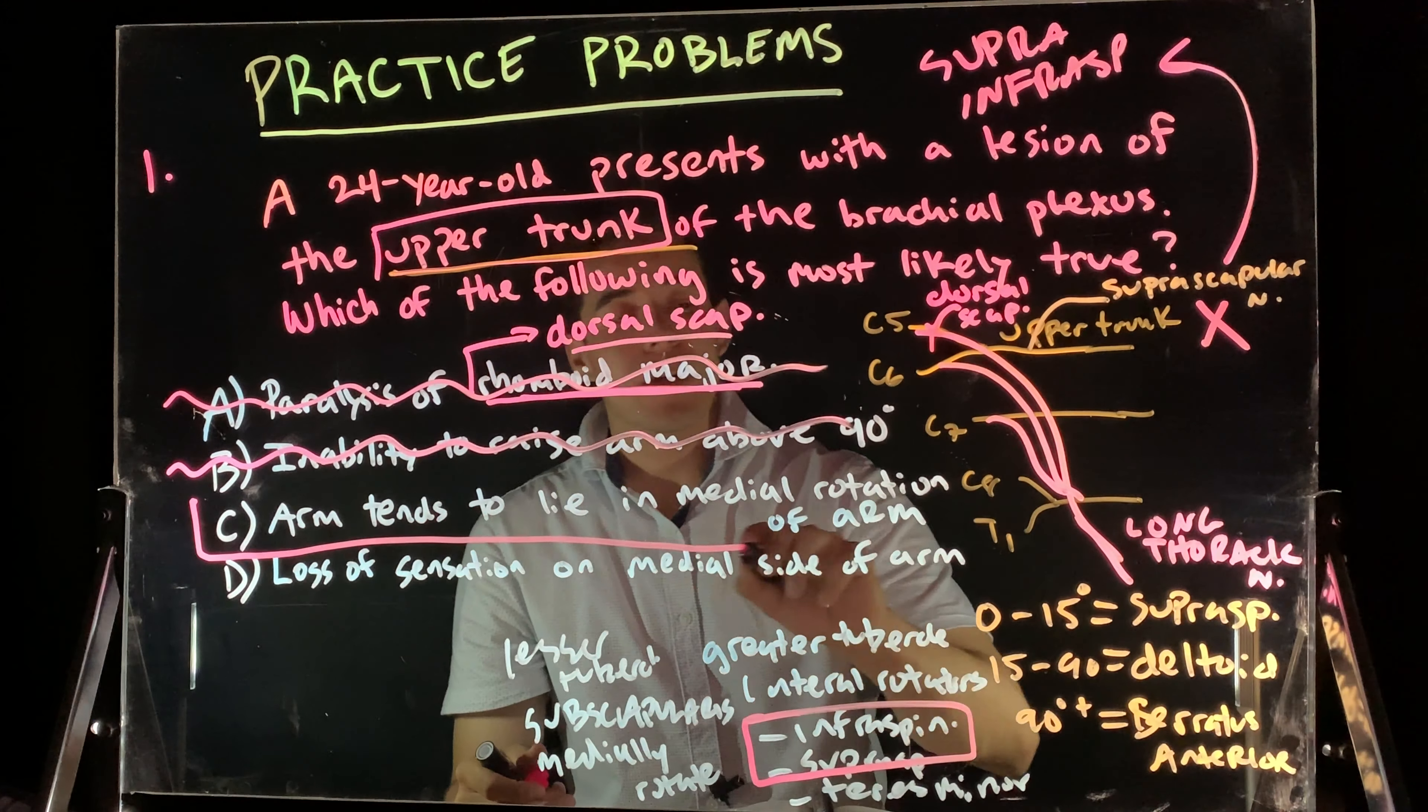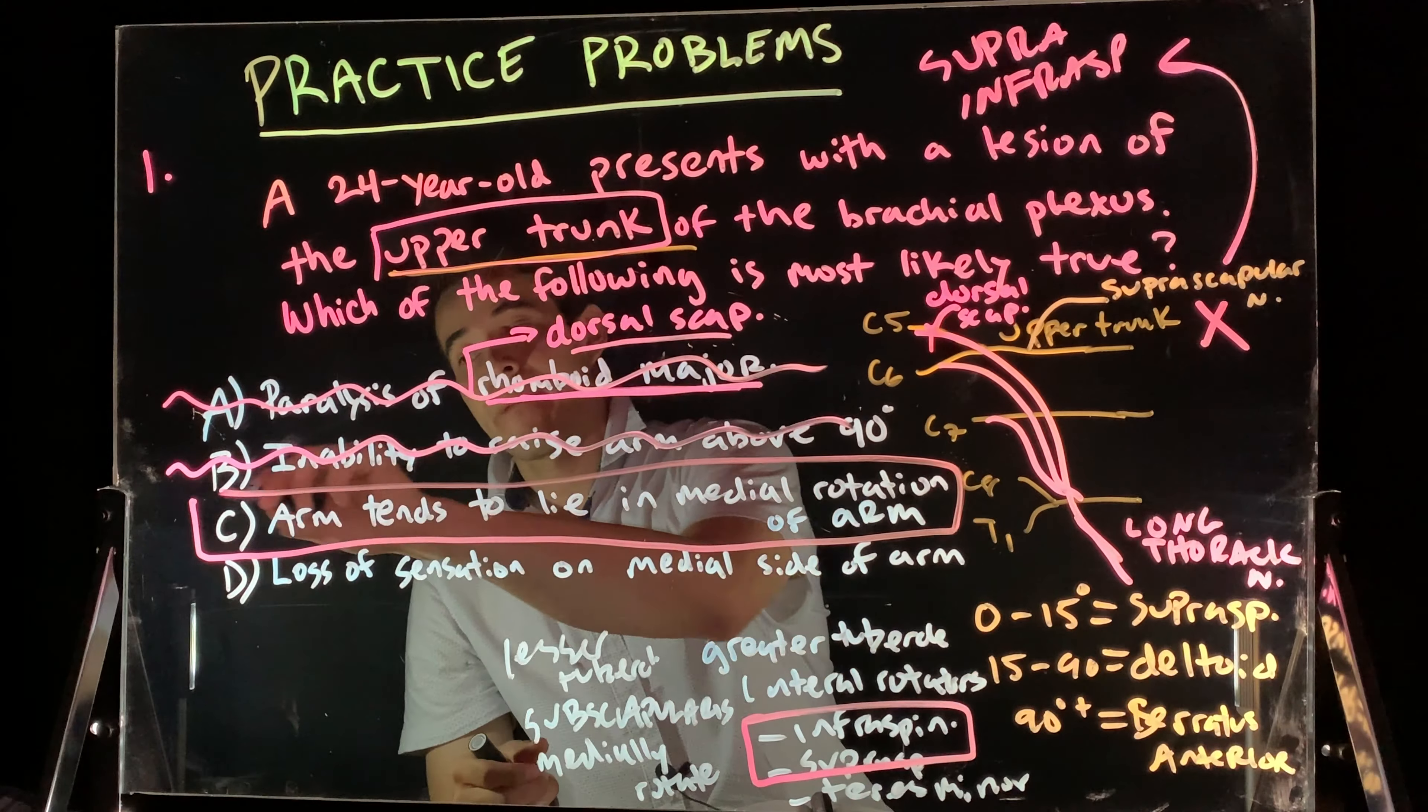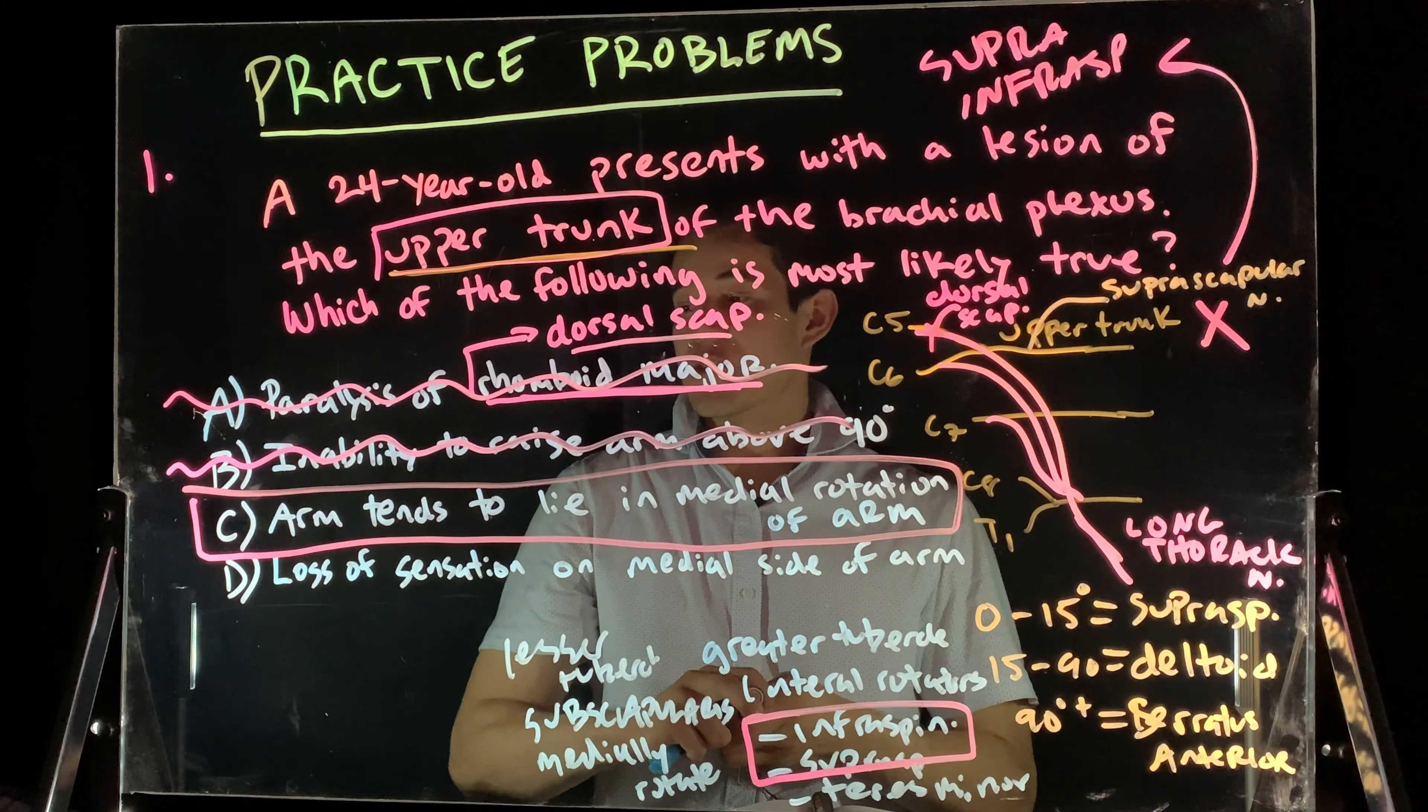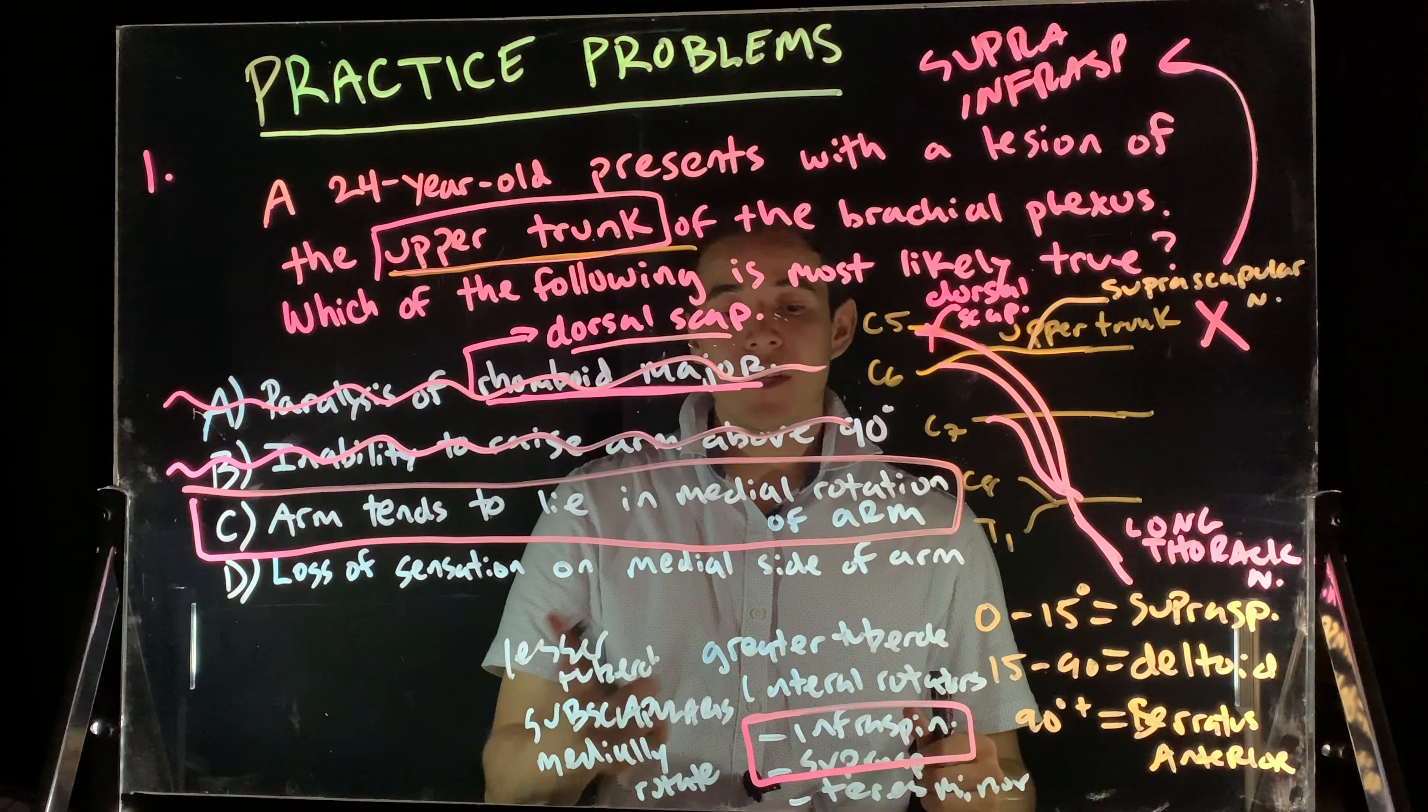So, the arm is going to be more medially rotated because we've lost innervation to our lateral rotators. So, this one here is going to be our answer choice. All right? And then, just to finish it off, loss of sensation on the medial side of the arm.